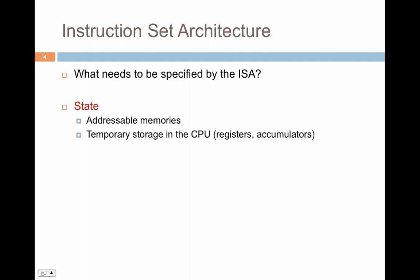The first thing you need is to define state, and by state we mean addressable memories — we want to be able to access values from memory, loading and storing values. At the same time we also need temporary storage in the CPU, such as registers and accumulators, where we can do data manipulation. So we need memory to store text and data used in a program, and temporary storage — registers and accumulators — which are closer to the processor.